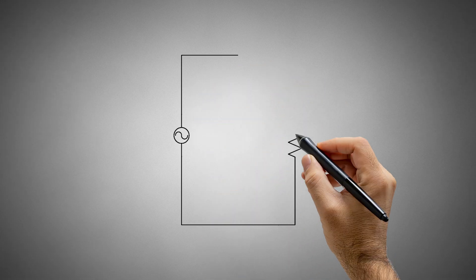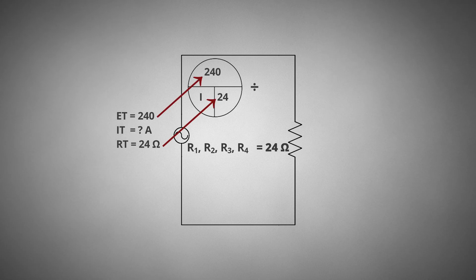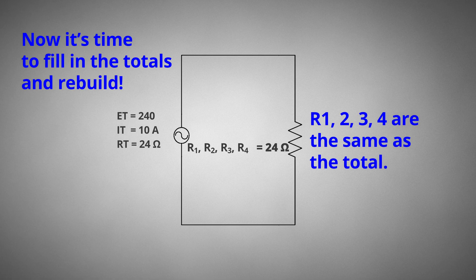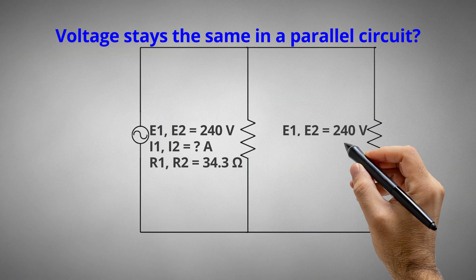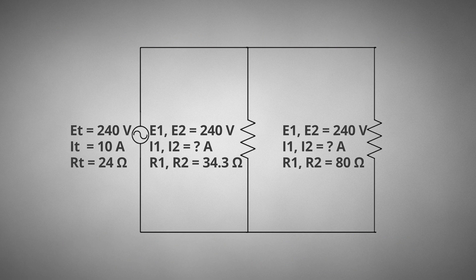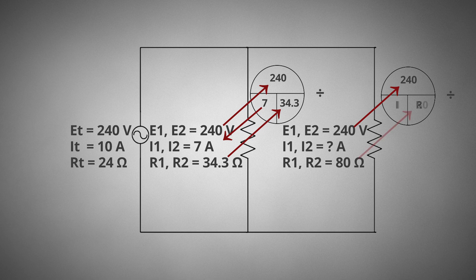Now that we have found the total resistance, we can calculate the total amperage. 240 volts divided by 24 ohms of total resistance equals 10 amps of total current. Now it's time to fill in the totals and rebuild — R1, 2, 3, and 4 are the same as the total. Voltage stays the same in a parallel circuit. 240 volts divided by 34.3 ohms equals 7 amps; 240 volts divided by 80 ohms equals 3 amps.